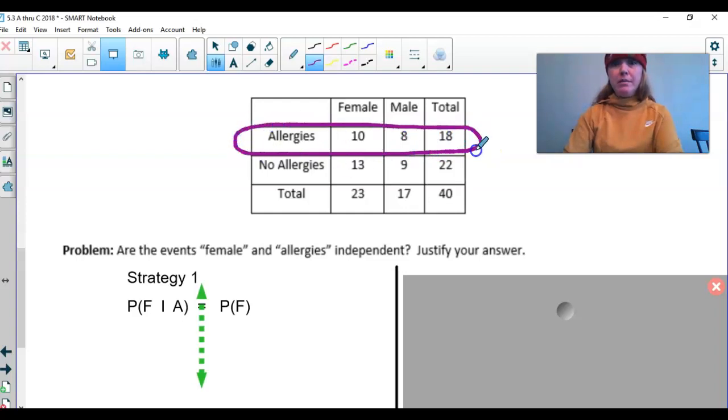Whatever's to the right of this line is what goes in the denominator. So how many people have allergies? There's a total of 18 of them. In the numerator, then, is both. How many females also have allergies? That's right here, 10. 10 out of 18.